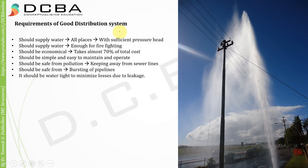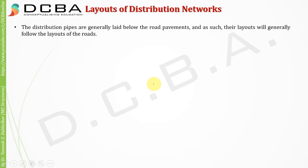The distribution system should be watertight to minimize losses due to leakage, avoiding wastage of treated water. Distribution pipes are generally laid below road pavements, so their layout follows the layout of the roads. Whenever waterworks are ongoing, the road is excavated first because these distribution networks are placed underneath. However the road goes, the distribution pipes follow that same path.